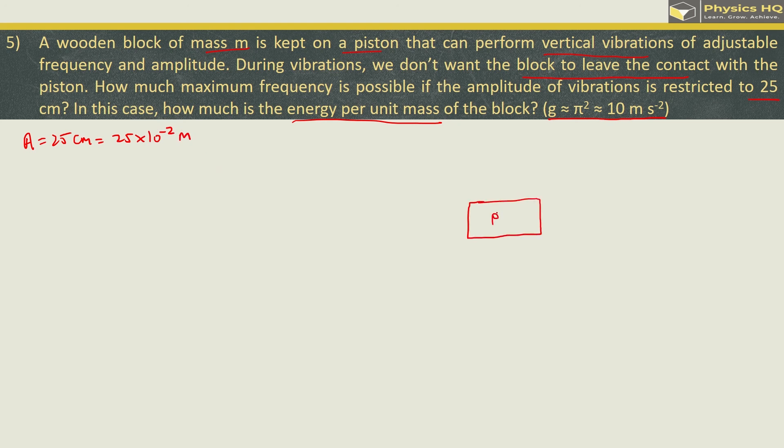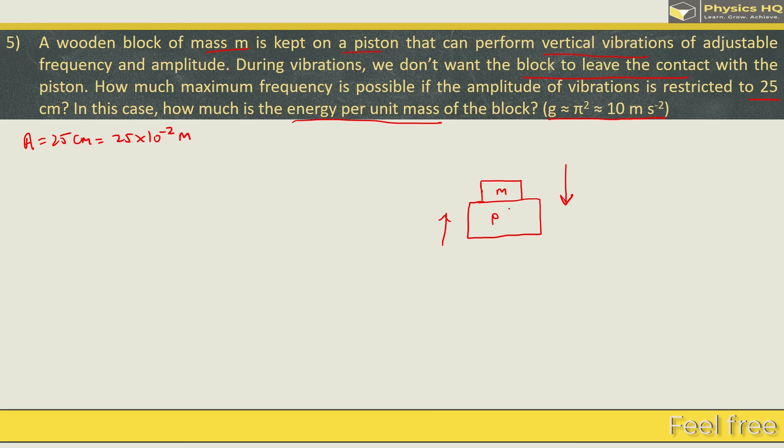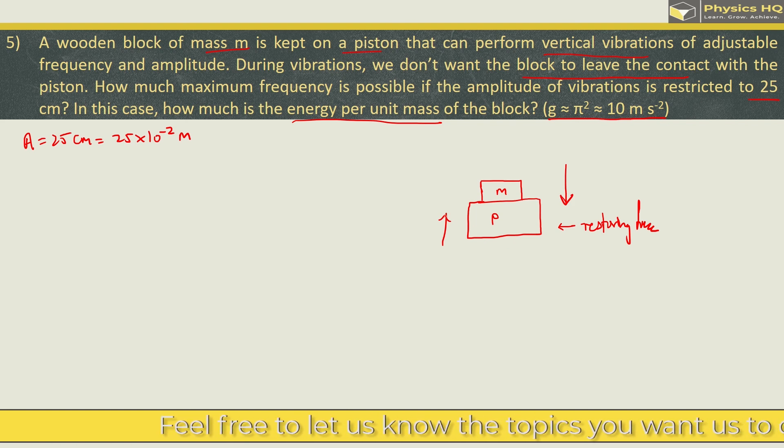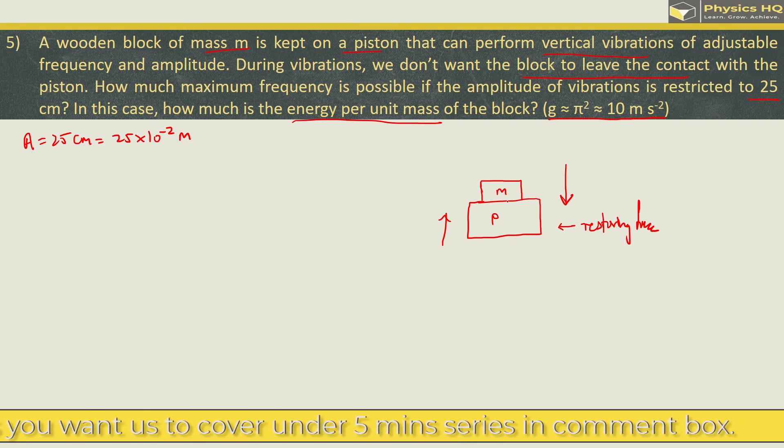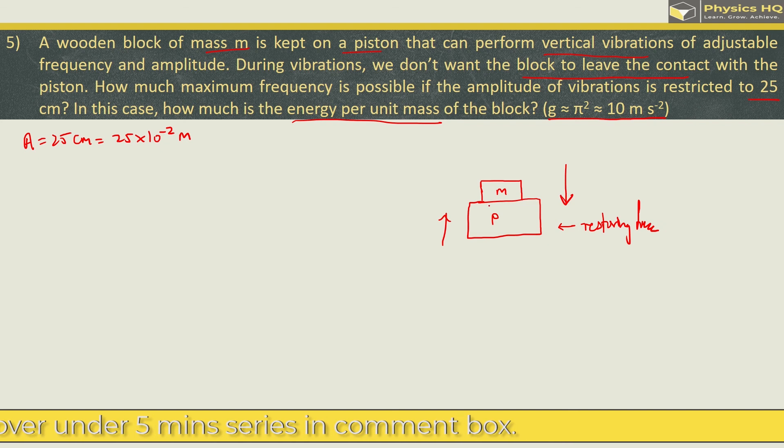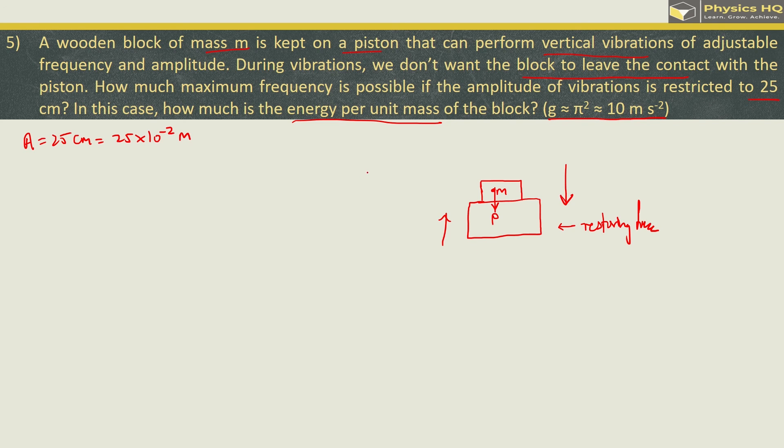So amplitude is 25 centimeter or you can write it as 25 into 10 raise to minus 2 meter. Now let us say this is the piston and this block is the mass m. Now there is no problem when the piston goes up as the mass will also go up with it, but the problem will come when the piston comes down. The piston is going to come down with the restoring force of the SHM. The thing is the mass, if it comes down at the same speed, then the contact between them will be maintained.